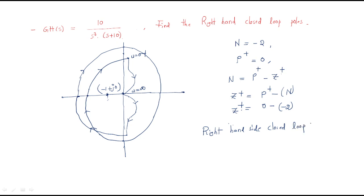Therefore, the right-hand side closed-loop poles, represented by Z-plus, equals 2. We are getting 2 closed-loop poles on the right-hand side. Whenever closed-loop poles are on the right-hand side, the system is directly unstable. So this is an unstable system.